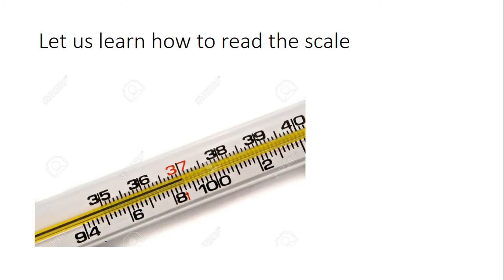Looking at the scale in detail, the top scale shows Celsius graduation and below it is the Fahrenheit graduation. The markings are at 94, 96, 98, and 100. The mercury level is between 98 and 100, as indicated by the upward red arrow shown here.